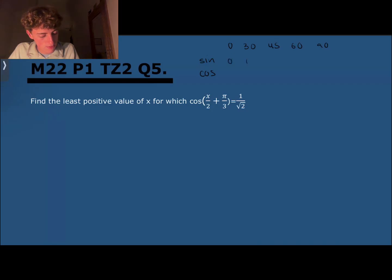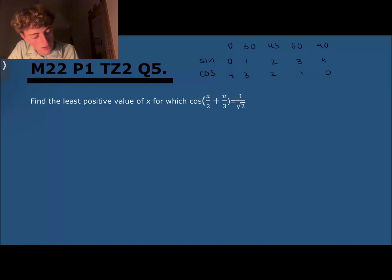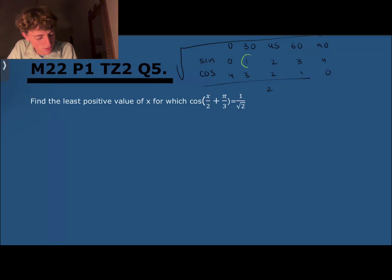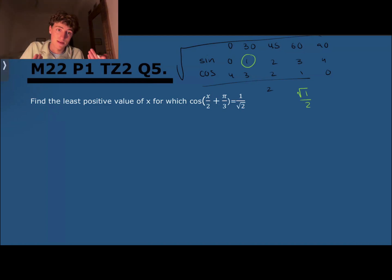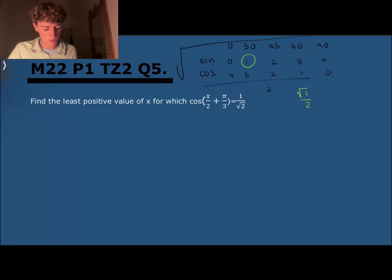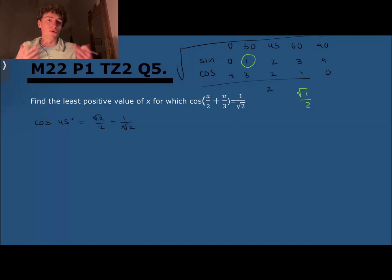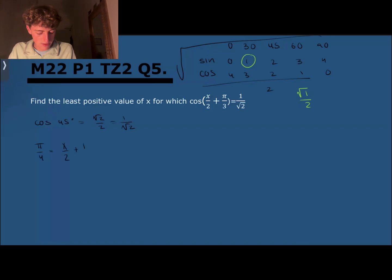Then write 0, 1, 2, 3, 4 across for sine and 4, 3, 2, 1, 0 for cosine, and take the square root of each value over 2. For example, sine of 30 is root 1 over 2. Using this table, we find that cos(45°) equals root 2 over 2, which is the same as 1 over root 2. So 45°, or π/4, equals x/2 plus π/3, and solving gives x/2 equals π/4 minus π/3. With a common denominator of 12, that's 3π minus 4π over 12, giving x/2 equals minus π/12, so x equals minus π/6.